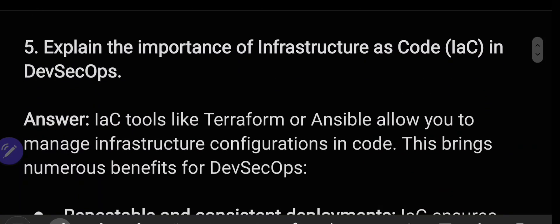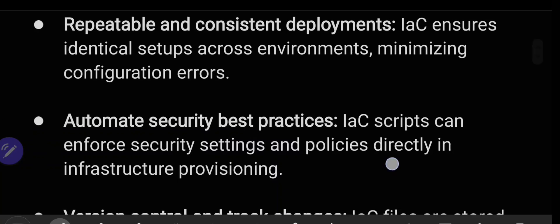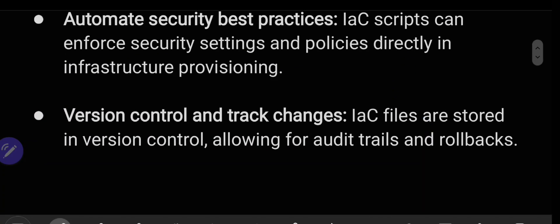The next question is: explain the importance of Infrastructure as Code (IaC) in DevSecOps. IaC tools like Terraform or Ansible allow you to manage infrastructure configuration in code. This brings numerous benefits: repeatable and consistent deployments, minimizing configuration errors; automation of security best practices, where IaC scripts can enforce security settings directly in infrastructure provisioning; and version control to track changes, with IaC files stored in version control allowing for audit trails and rollbacks.